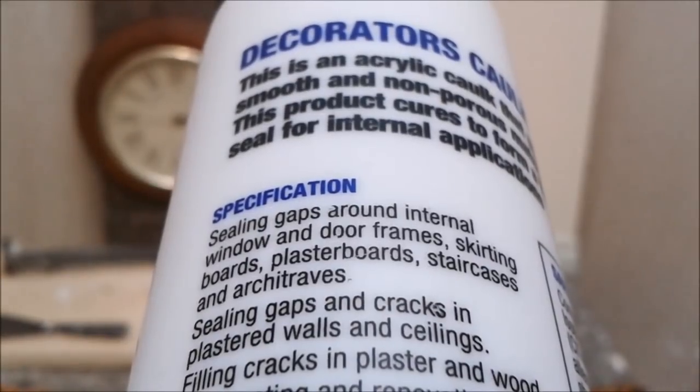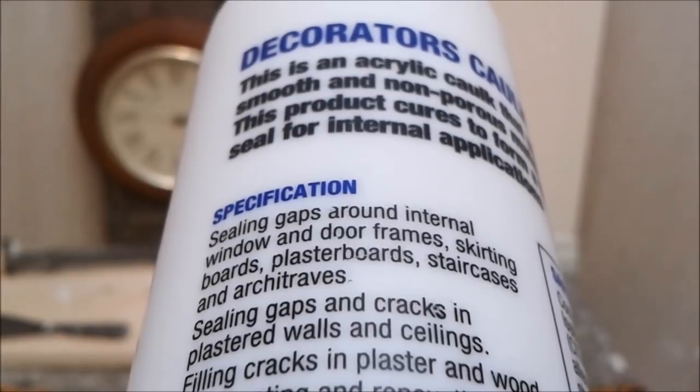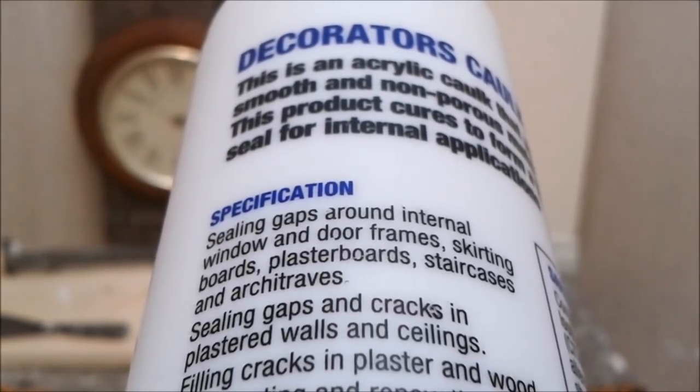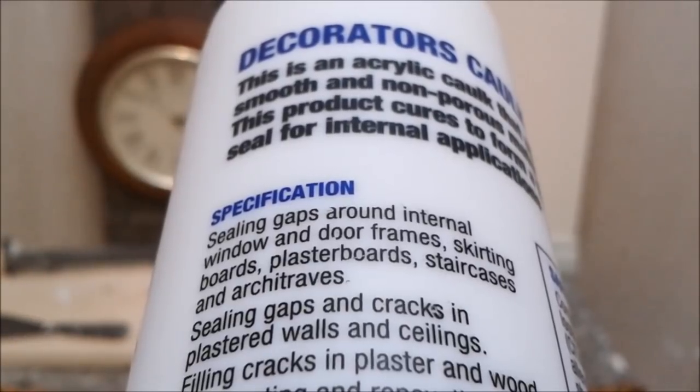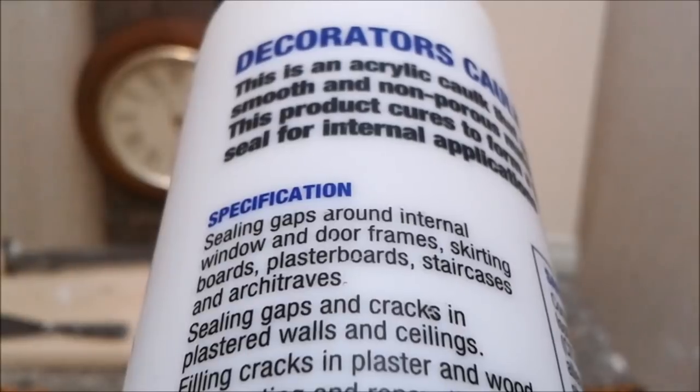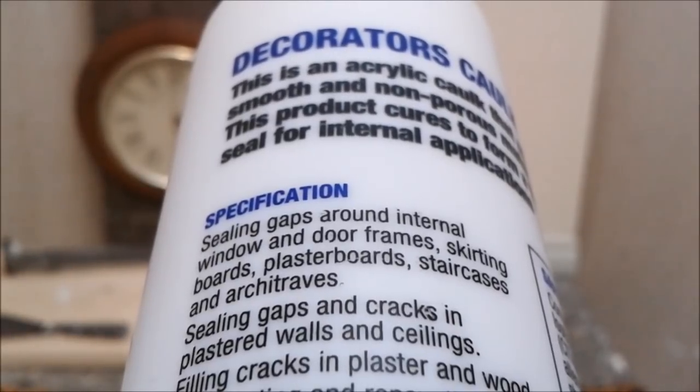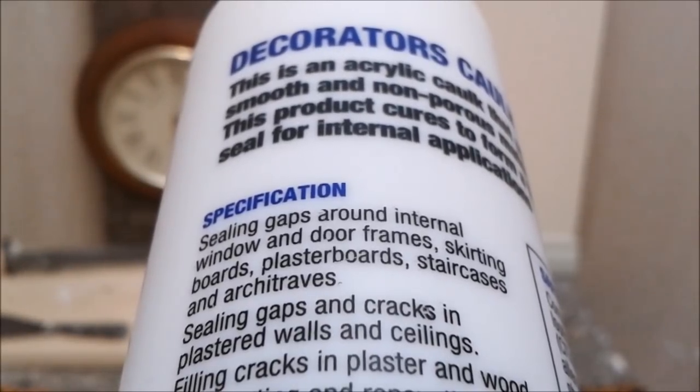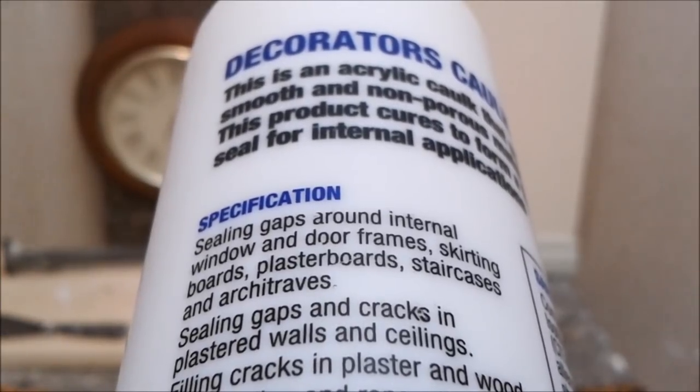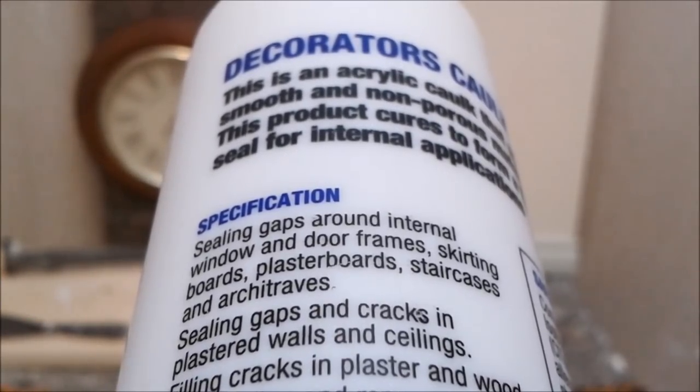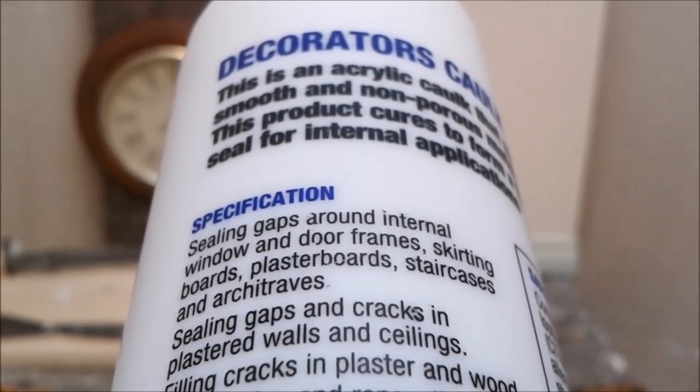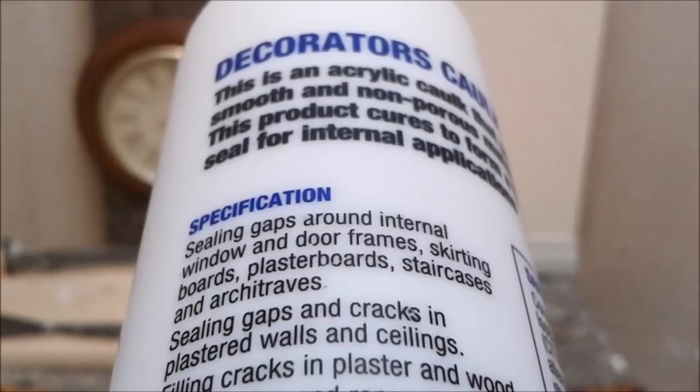So then when we read some of the information on this cork tube: sealing gaps around internal window and door frames, plastered walls and ceilings, filling cracks in plaster and wood. Well for a start this isn't sandable, so filling wood, cracks in wood on the surface? No, never use this.